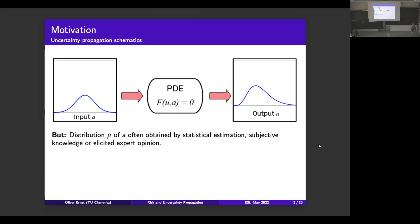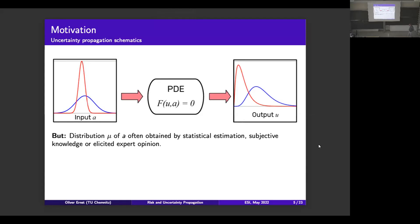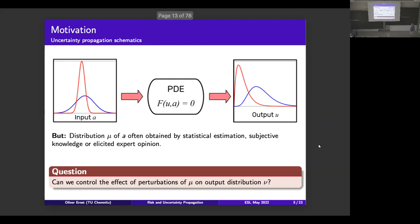Since you typically don't really know the input distribution, common ways of getting it include statistical estimation techniques if you have data, subjective knowledge, or systematic ways of eliciting expert opinion — but it's not a very exact science. The statistical part will have errors. If you have a different distribution in the input you're going to get a different distribution of the output, so the question is: can we control the effect of perturbations of the input measure μ on the output measure?